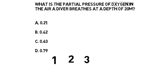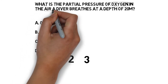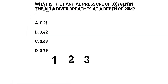The partial pressure of any gas you're breathing is going to be based on the density of the gas, which is based on the pressure you're at and the percentage of the gas you're breathing. In this question we're looking at oxygen, and we're breathing air. The percentage of oxygen in air is 21%, so in step one we write down 0.21.